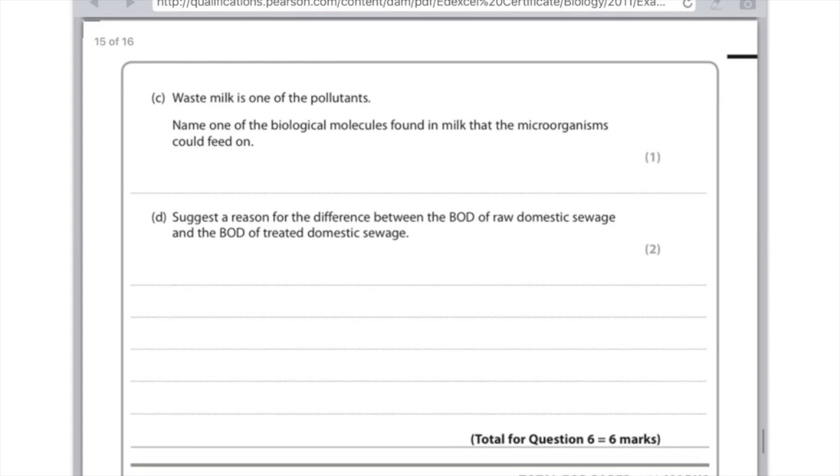Raw domestic sewage has a higher BOD. What that means is there'll be more microorganisms present because it's telling us there's less oxygen, meaning those microorganisms are respiring more as a result of having more nutrients from the sewage. Just say that raw has a higher BOD and there's more bacteria there.